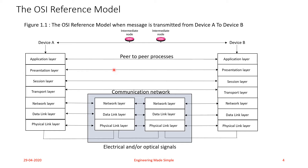Figure 1.1 is the OSI reference model when a message is transmitted from Device A to Device B. Within the same device, data encapsulation takes place, such as the data from the Application layer moving on to the Presentation layer of the same device. Between two different devices, peer communication takes place with the help of intermediate nodes and peer-to-peer processes or protocols.